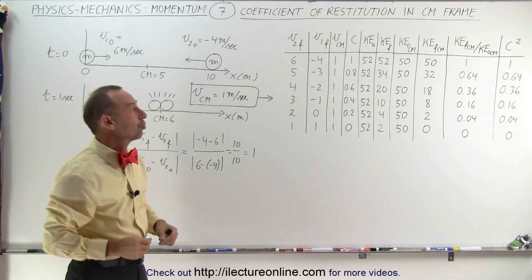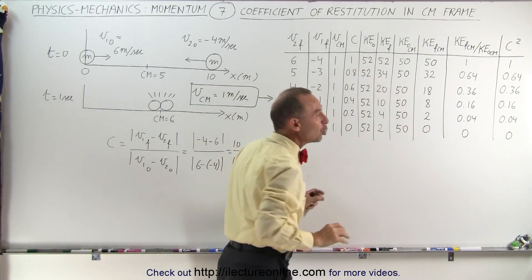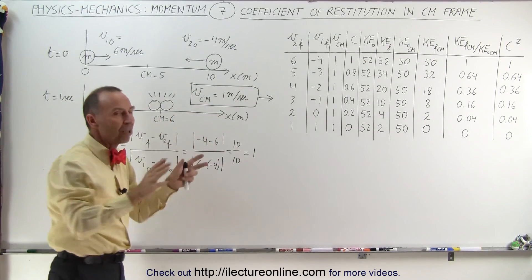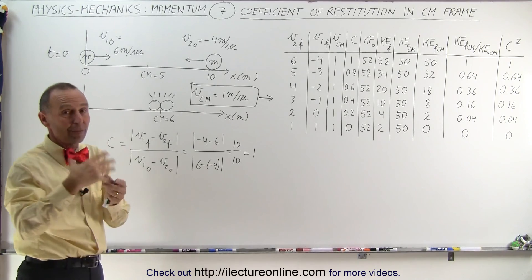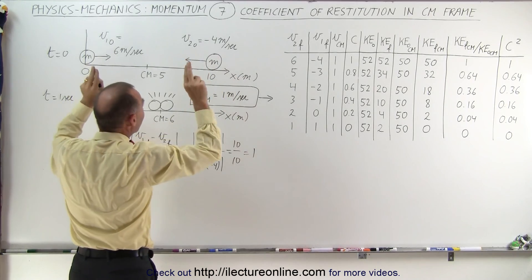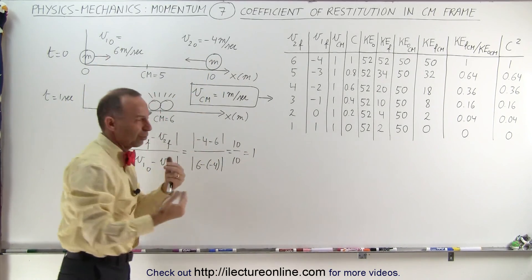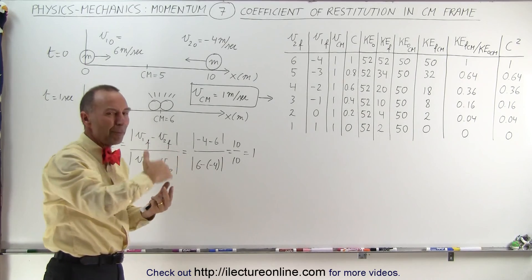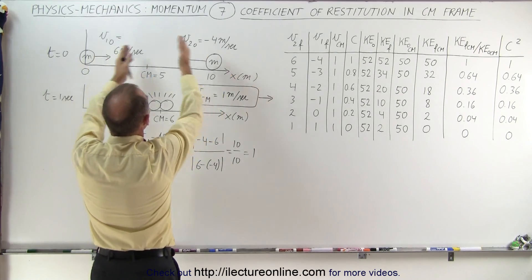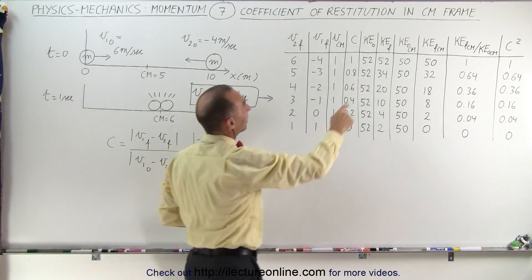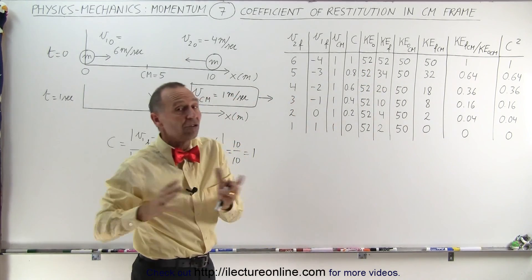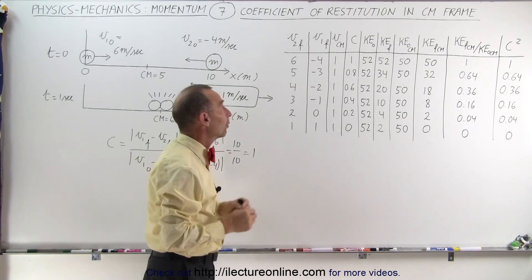Energy is completely conserved. The total kinetic energy was 52 — calculated by taking the velocities squared (ignoring the one-half and the mass, since we're looking at ratios that cancel anyway). The kinetic energy after the collision, since the velocities are simply exchanged, is exactly the same. We can also say that the coefficient of restitution equals 1: if all energy is conserved, C equals 1.